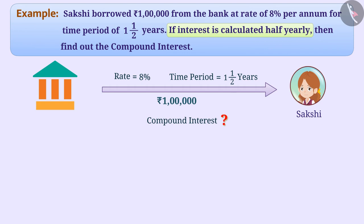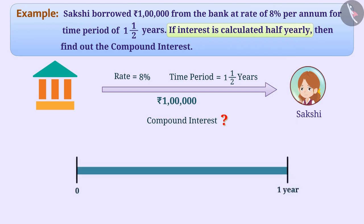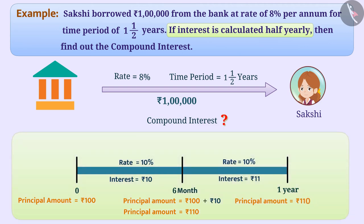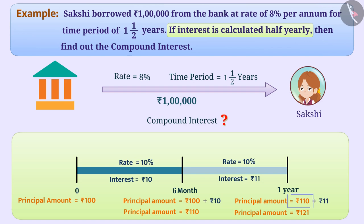In this example, we are given that compound interest is getting compounded half yearly. This means that the interest is calculated for each half year. To get the principal of the next 6 months, the principal and the interest received for the past 6 months are added. The time period after which the interest is added to the previous principal each time to create a new principal is called the conversion period.